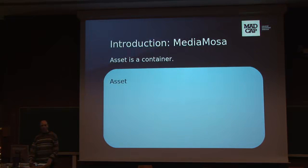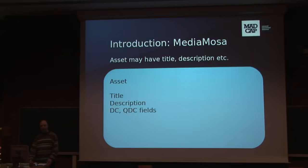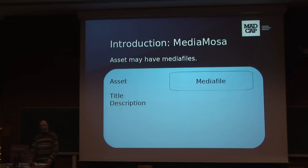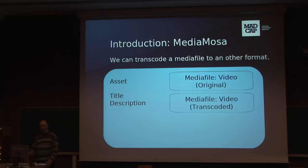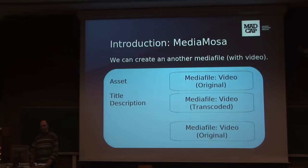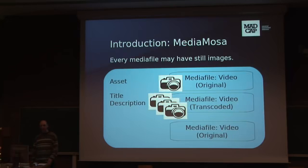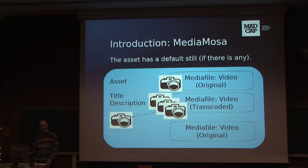A short introduction about the main elements of MediaMosa. MediaMosa stores assets — an asset is a container where you can store title, description, and other fields. An asset may have one media file or more, and the media file may have a video. A video has a codec, file size, and duration. You can transcode the media file to another format, so you have an original video and a transcoded one. You can also upload another media file, giving you two originals and one transcoded. You can easily create one or more still images from the videos and set one of them as the default.